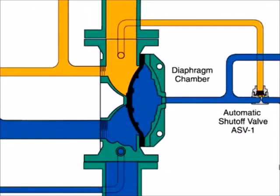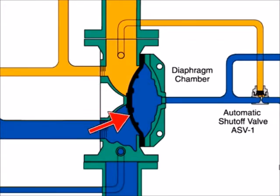The model DV5 Deluge Valve is a diaphragm style valve that depends upon water pressure in the diaphragm chamber to hold the diaphragm closed against the water supply pressure.